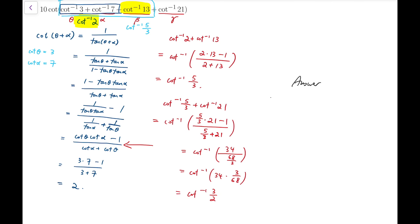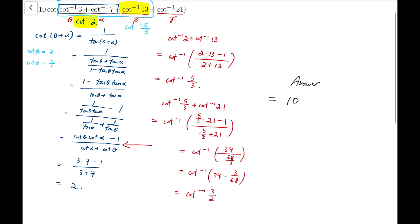So that means our final answer is equal to 10 times cotangent of arccot tangent of 3 over 2. And that is exactly 10 times 3 over 2. And so 15 is our final answer.